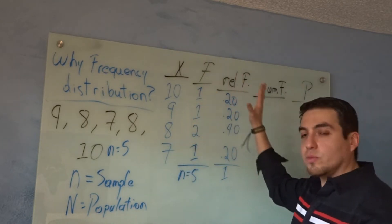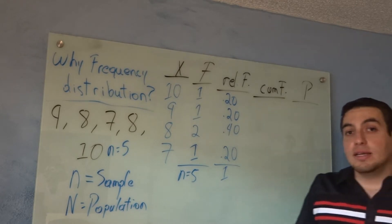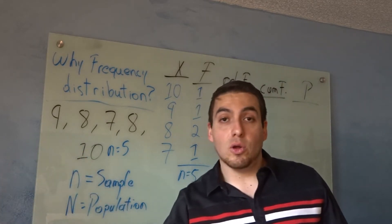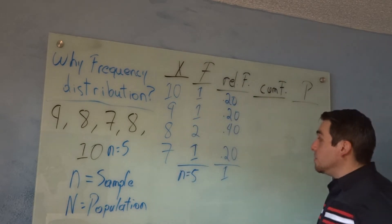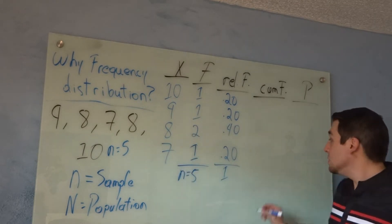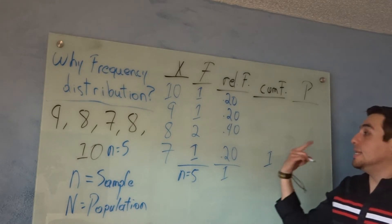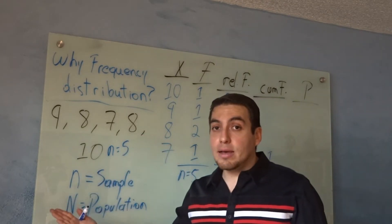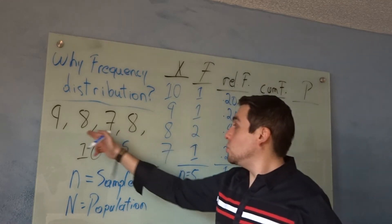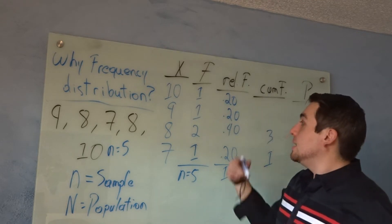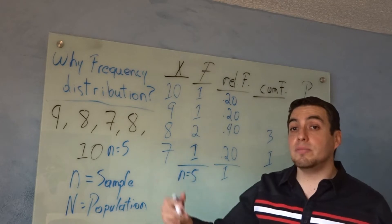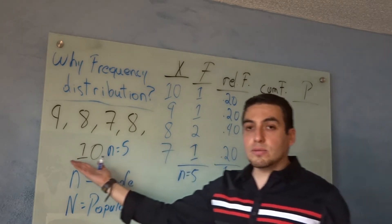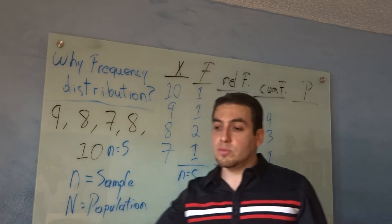The cumulative frequency — here you shift your interest starting at the bottom. It's asking how many times did it happen at that point and below it. How many times did 7 happen? Once, so that goes there. For 8: how many times did 8 happen plus all numbers below? We have 1, 2, 3 — so the cumulative frequency is 3. For 9: 1, 2, 3, 4 — so 4. At the top, 10 happened once plus all below gives us 5, which equals n.